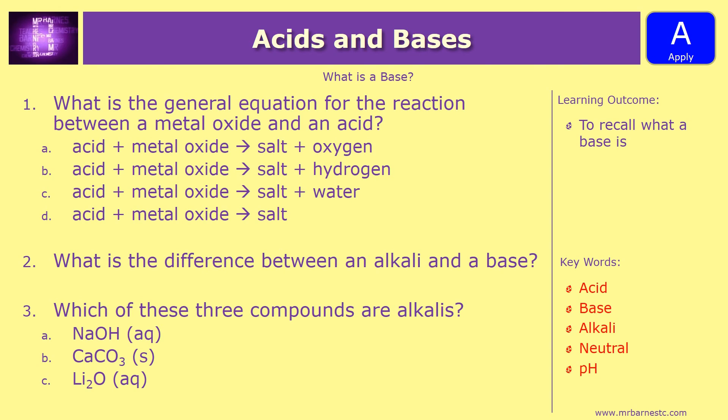So is it A: an acid plus metal oxide gives you salt and oxygen; B: salt and hydrogen; C: salt and water; or D: just salt?